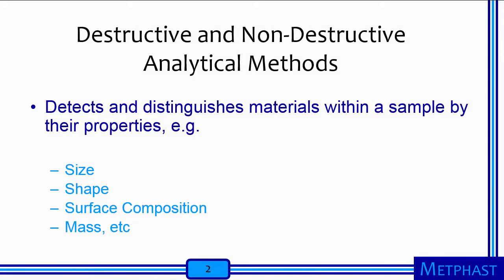Nanomaterials can be differentiated from other nanomaterials using destructive and non-destructive analytical methods. These methods utilize tools or equipment that distinguish between different properties of the materials, such as particle size, shape, surface composition, and so on, that is within a sample.